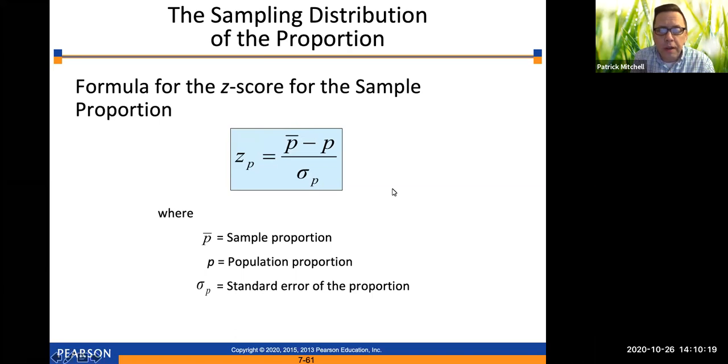And then to calculate a z score, the z score pretty much always works the same way. It's a score from the distribution minus the mean of the distribution divided by the standard deviation of the distribution. So in this case, an individual score from this sampling distribution is p bar, a sample proportion, minus the population proportion p, that's the mean of this sampling distribution. And then the standard deviation of this sampling distribution is sigma sub p, which we saw how to calculate on the last slide.